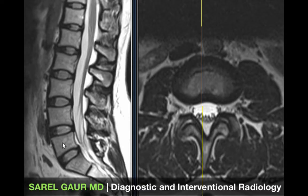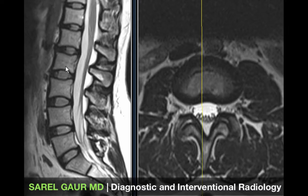Anteriorly I have the vertebral column — the vertebral bodies and the intervertebral discs. You can see how they all line up one on top of another with a gentle curvature, which is called the lumbar lordosis.